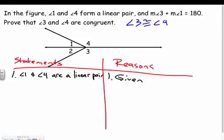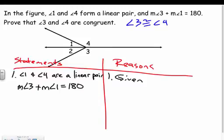Also given: the measure of angle three plus the measure of angle one equals 180. So angles three and one add up to 180 — that's our given.